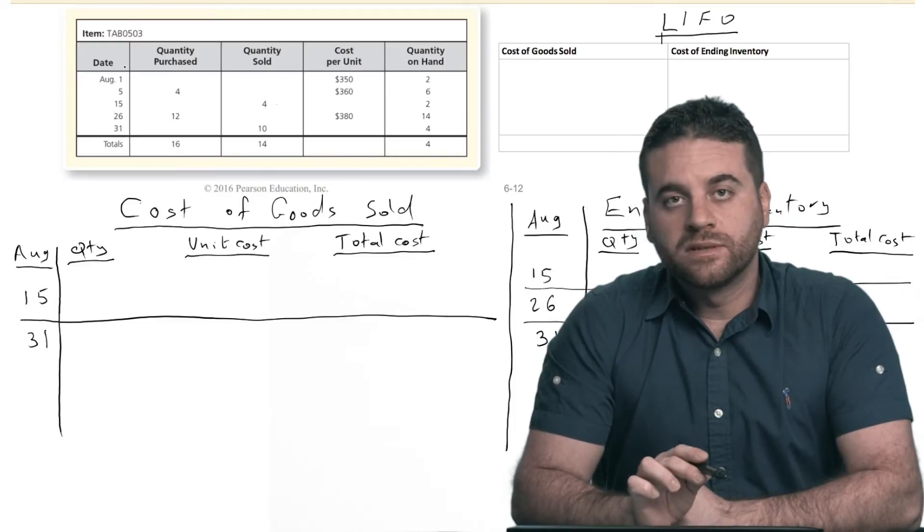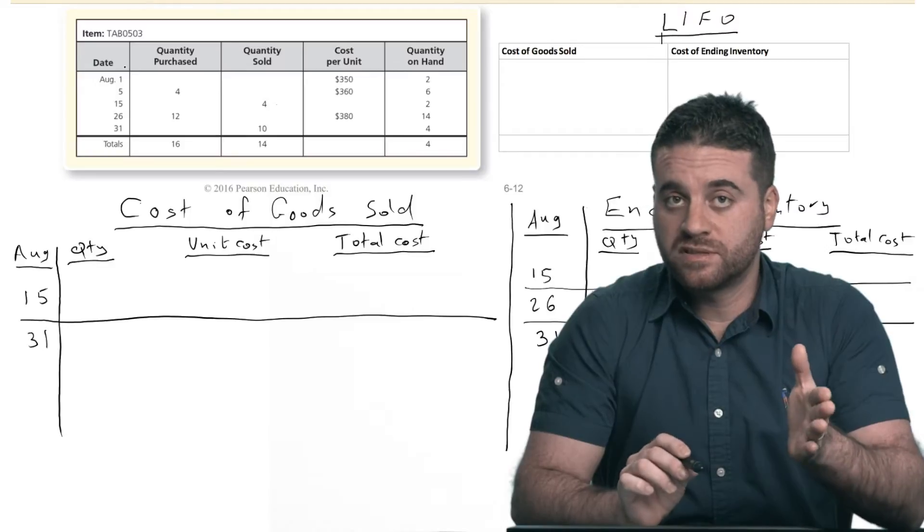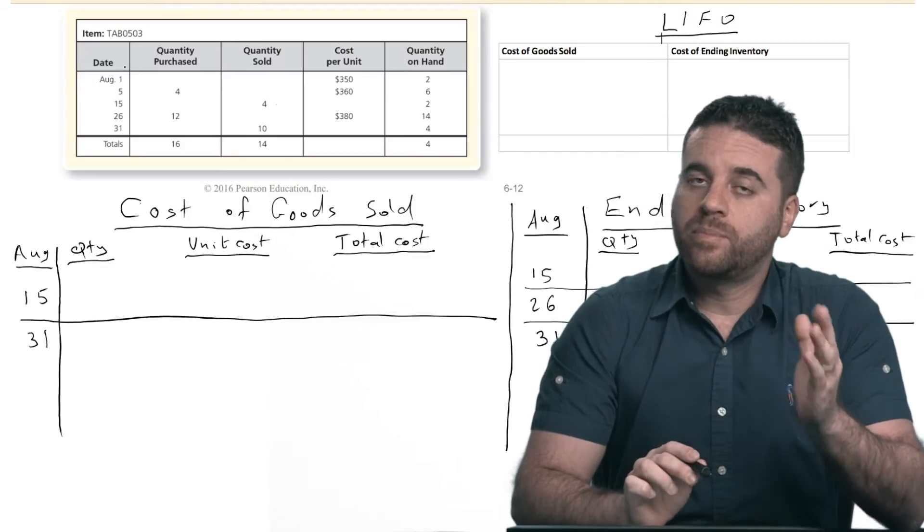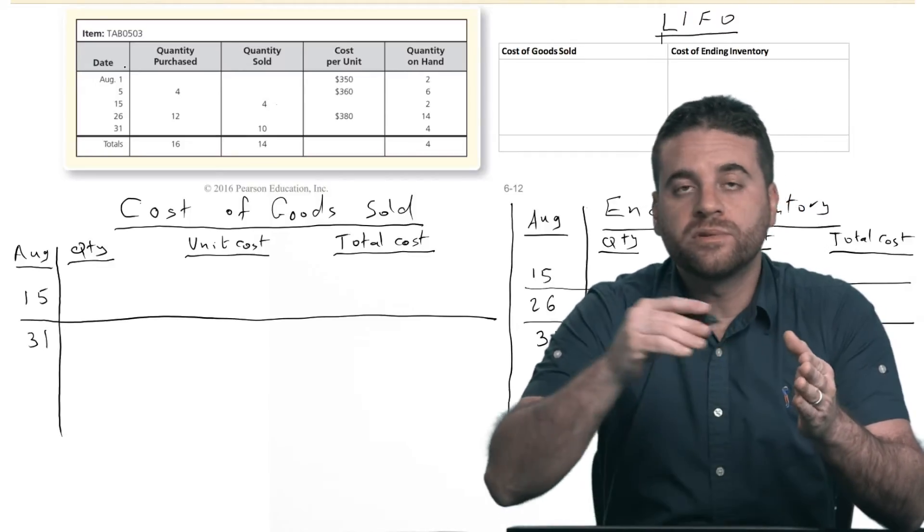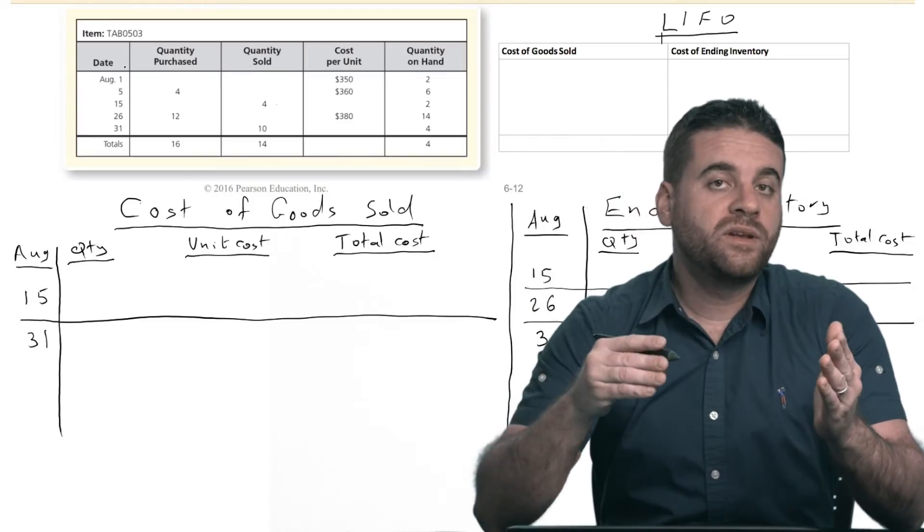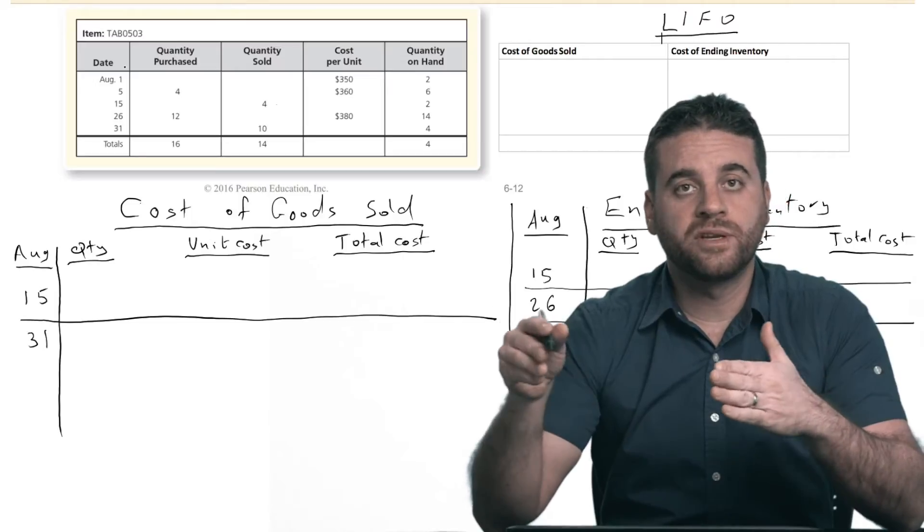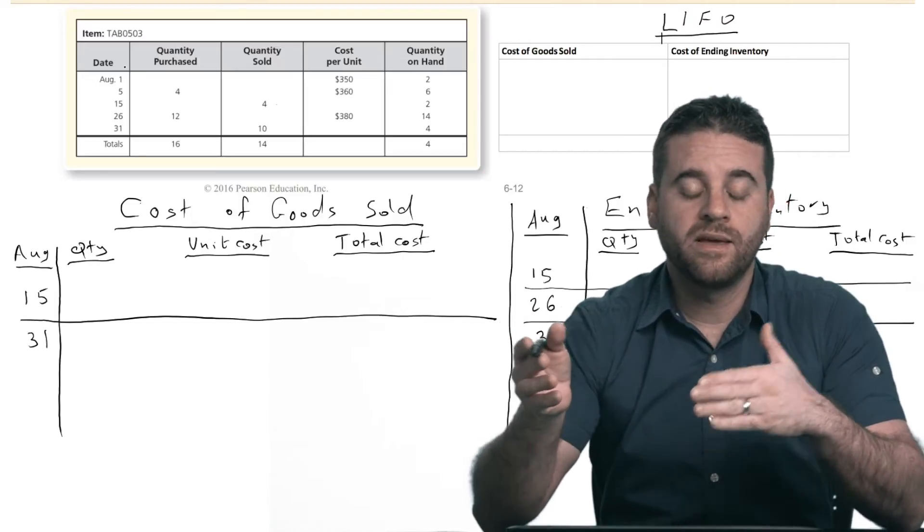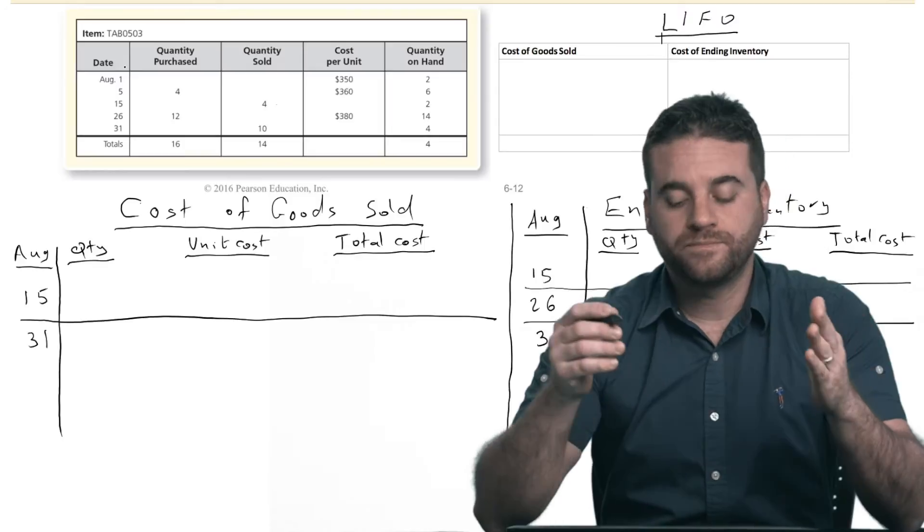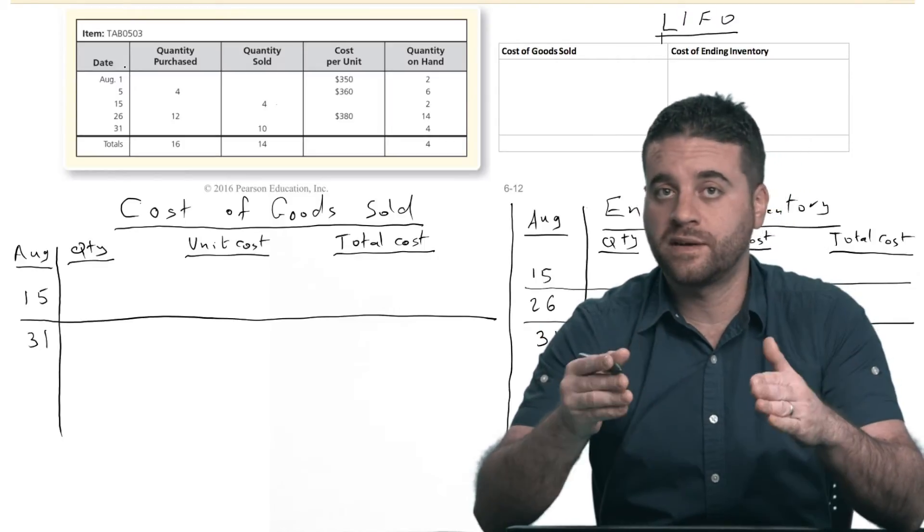We will use the perpetual. Remember, we have periodic and perpetual. So we're going to use the perpetual system in this video. And perpetual means that you continuously adjust your inventory balance. You do not wait until the last day of the month. That would be the periodic. The periodic is when you adjust your inventory the last day of the month. But perpetual, we do that immediately after every purchase or every sale.